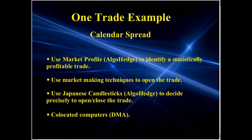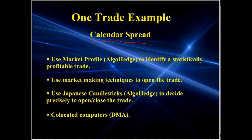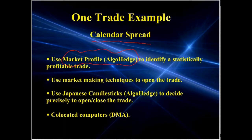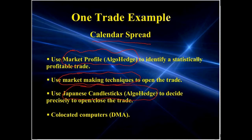Here's an example of a real trade we do in Chicago — a calendar spread using futures. With a calendar spread, you're trading one expiration against the same underlying future in another expiration. We use market profile to identify a statistically profitable trade, watching for when the spread between those two months gets to a first or second standard deviation. We use market-making techniques — we very rarely just take. We're typically putting our prices out there and waiting for the market to come to us. Then we use Japanese candlesticks for the precise timing of getting in and out.